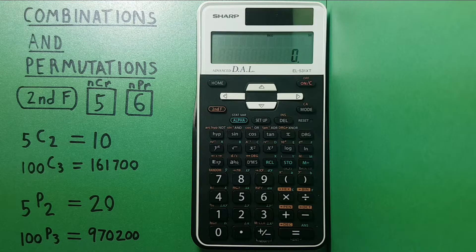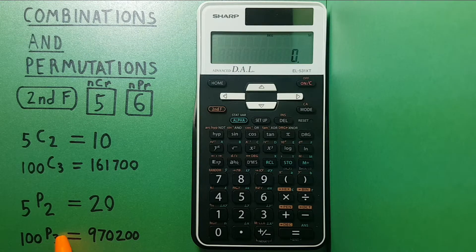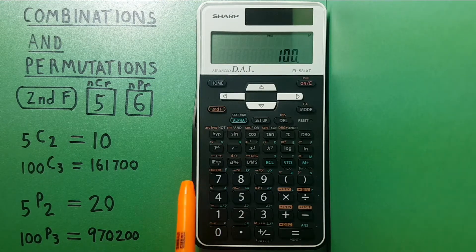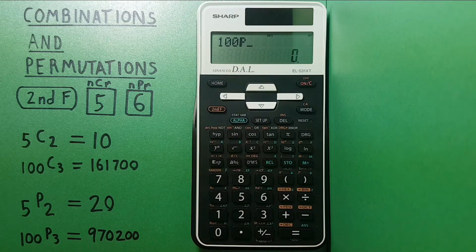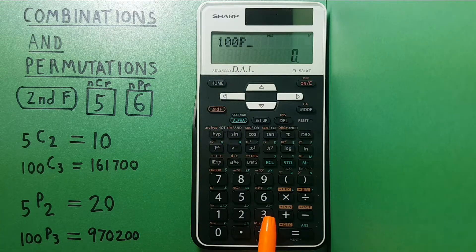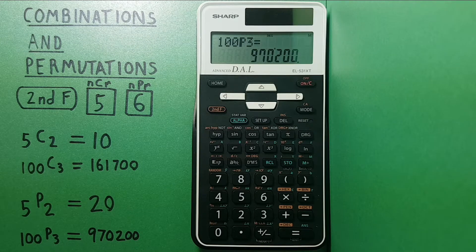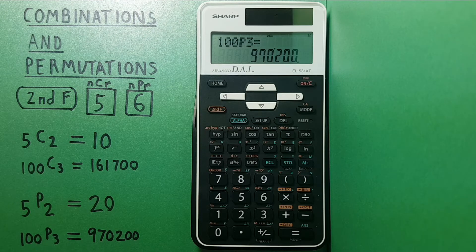How about with a larger number, say again 100 choosing three as a permutation? We enter 100, second function six to get the P, then three, and equals. We can see we get 970,200 possible permutations.